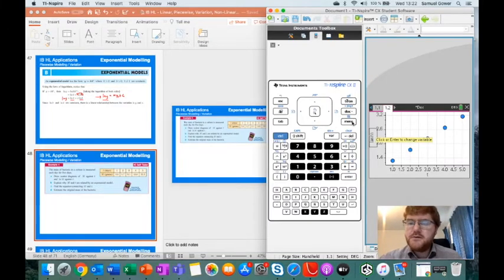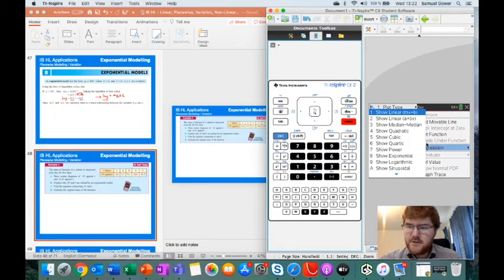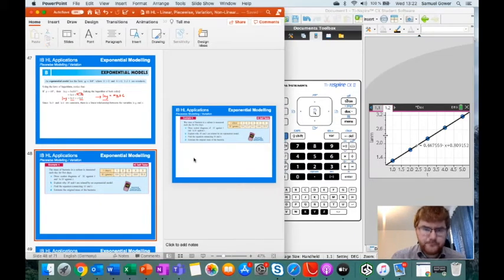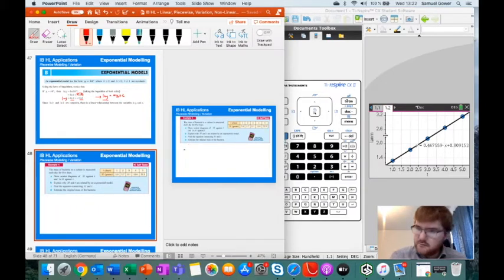We work this the same way we did before. Go to Menu, Analyze, Regression, and Show Linear, very similar to what we did before. We get this regression line for the data we've plotted. I'm going to write this in: y equals 0.467559t plus 0.809152. I'll write the whole thing down.